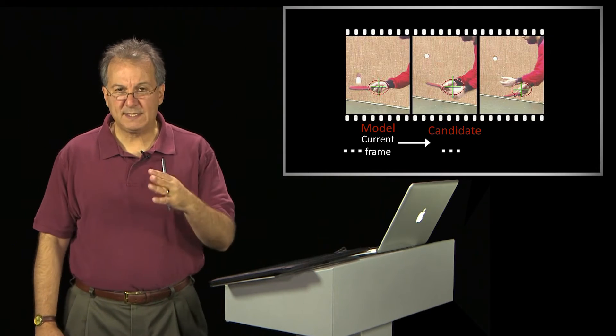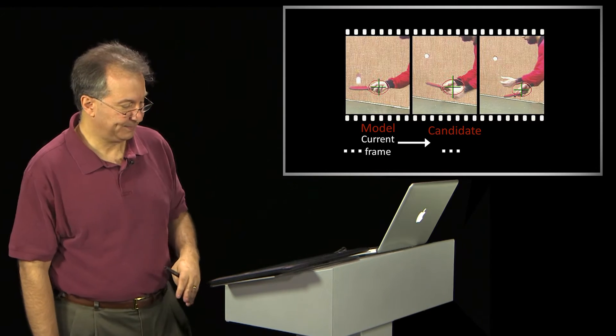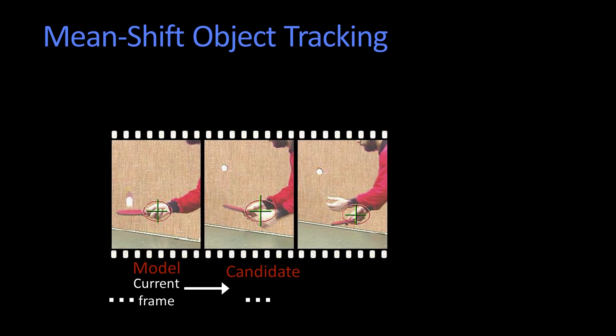So what does this have to do with tracking? Basically, mean shift tracking is instead of just tracking the mean of a distribution, we're going to try to track something about a distribution of a region — I'll make that clear.